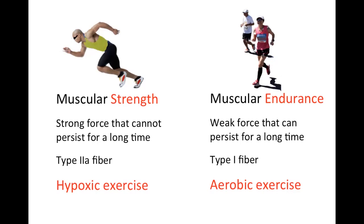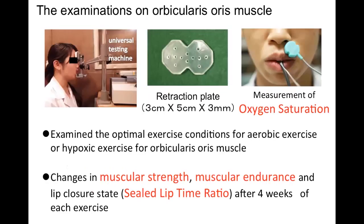In the field of sports medicine, it is known that hypoxic exercise is effective for increasing muscular strength. Hypoxic exercise is a method for exercising while keeping a low oxygen concentration in the muscle. Aerobic exercise is effective for increasing muscular endurance and is performed while maintaining a high oxygen concentration in the muscle. Therefore, we measured oxygen saturation in the muscles and examined the optimal conditions for training in which aerobic exercise or hypoxic exercise was performed. We also examined the changes in muscular strength, muscular endurance, and lip closure state after four weeks of each exercise.